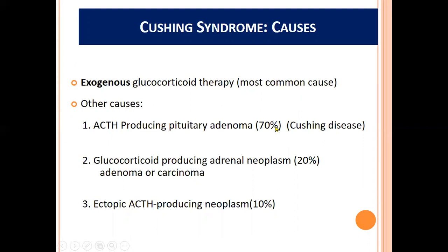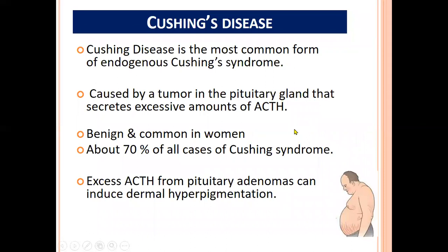Exogenous steroid administration is the most common cause of Cushing syndrome overall. Pituitary adenoma accounts for about 70 percent of endogenous Cushing disease. Adrenal cortical neoplasms — adenoma and carcinoma — account for about 20 percent, and ectopic ACTH production from neoplasms such as bronchogenic carcinoma accounts for about 10 percent.